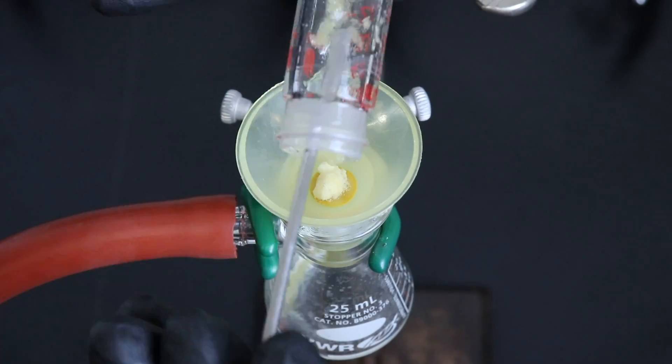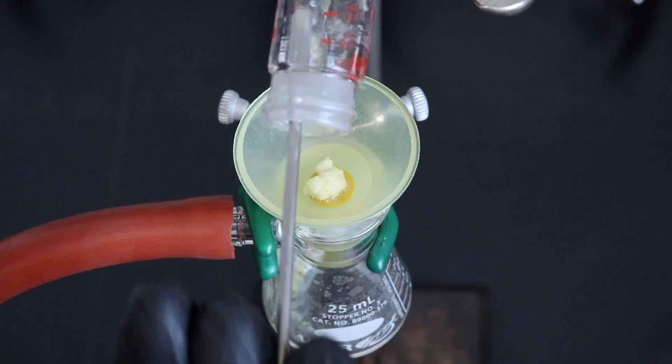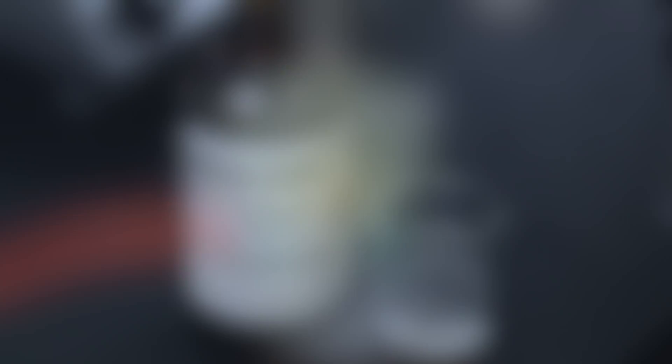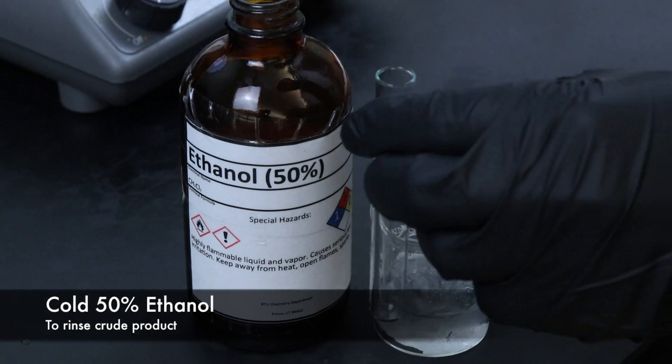The product can then be moved over to the Hirsch funnel to separate it from the solvent and I'll be rinsing it with some cold 50% ethanol.